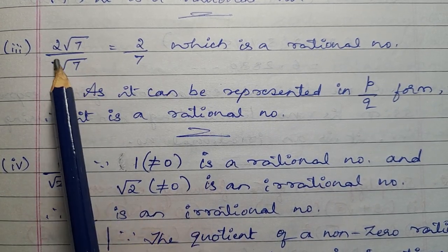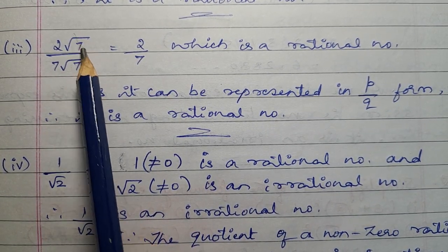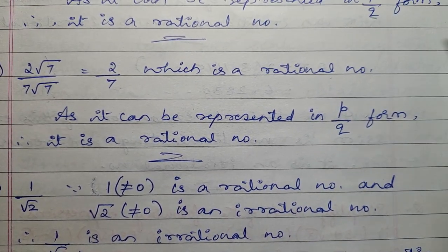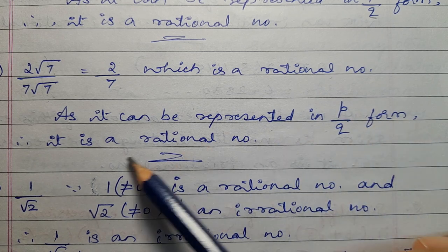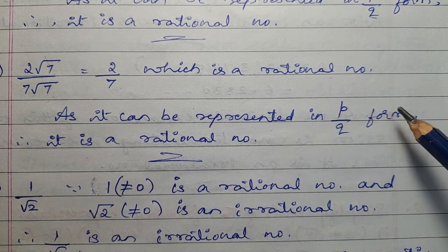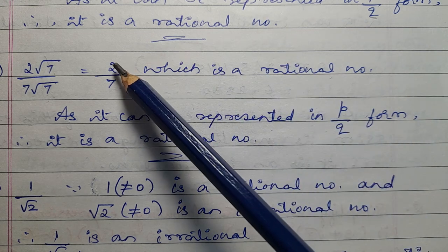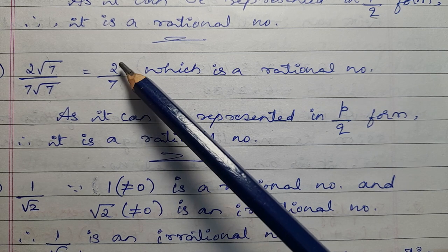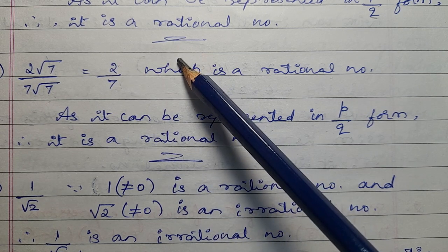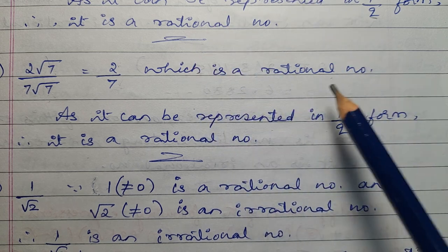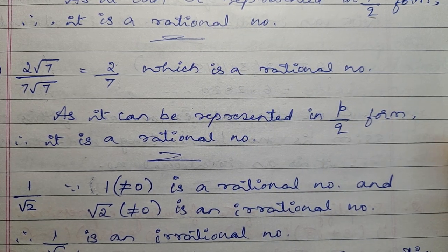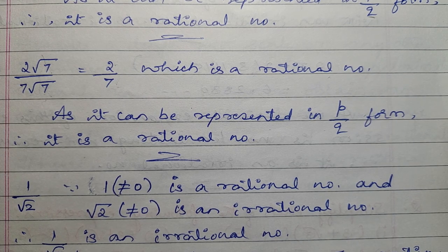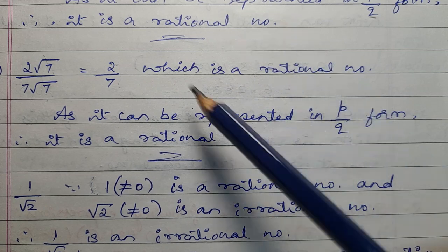Third one: 2 square root of 7 divided by 7 square root of 7. The square root of 7 terms get cancelled, giving 2 by 7, which is a rational number. As it can be represented in P by Q form, therefore it is a rational number.